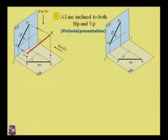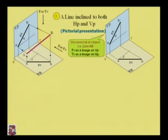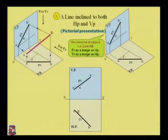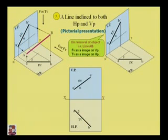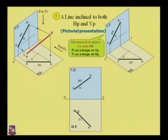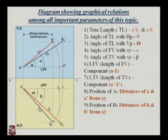This is the orthographic presentation of the line AB when it is inclined to both the horizontal plane and vertical plane. In the front view, situated in the vertical plane, the line A-dash and B-dash will make an angle alpha. When the horizontal plane is rotated 90 degrees clockwise, the angle will be beta, and the projection of line AB — that is, small a-b — will be situated below the XY line.